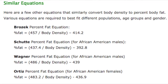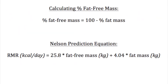Different ethnicities have different bone densities, so to accommodate different populations, there are other equations that can be used, like Brozek or Ortiz. Once the fat mass percentage is known, the fat-free mass percentage is determined by simply subtracting the fat percentage from 100.